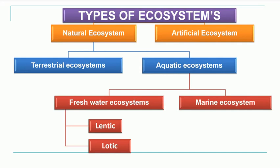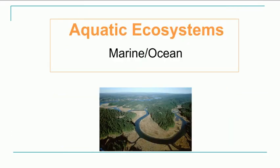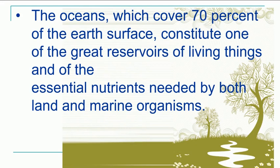Let's go through this flowchart once again which we have seen in the last lecture. Today we are going to concentrate on the marine ecosystem as well as another ecosystem present in between, called the Estuarine Ecosystem. We know that oceans cover 70% of the earth's surface, and they provide the essential nutrients required for both land and marine organisms.